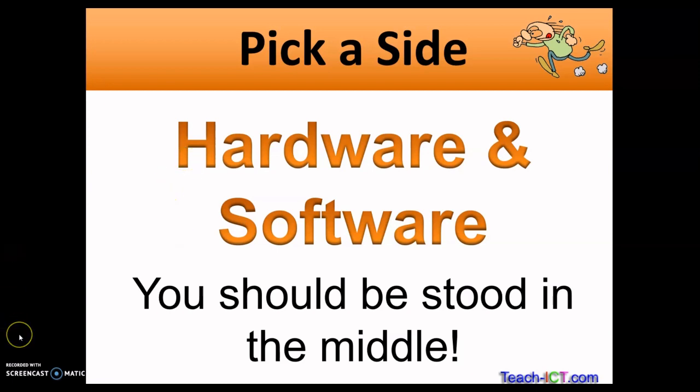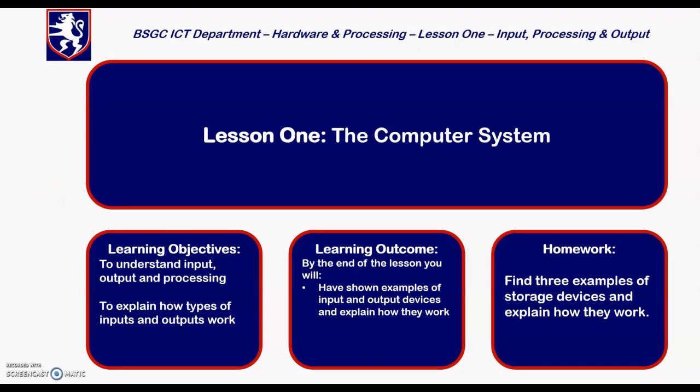Okay, so now we're going to look at the rest of the lesson, and what we're going to do over these next couple of weeks while we're off school, and the work that is expected of you. For this first part of this topic that we're doing, we're going to look at the computer system. Today you're going to understand inputs, output, and processing. You're going to explain how types of inputs and outputs work, and by the end of the lesson you should have shown examples of some input devices and output devices and how they work. Your homework, and yes you do have homework, is you're simply going to find three examples of storage devices and just briefly explain how they work. Show a picture of them and briefly explain how they work, like one paragraph, no more than 25 minutes worth of work.